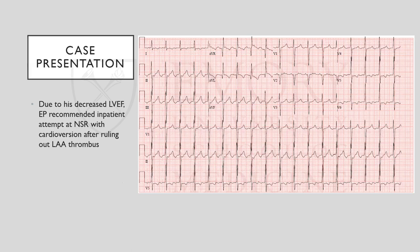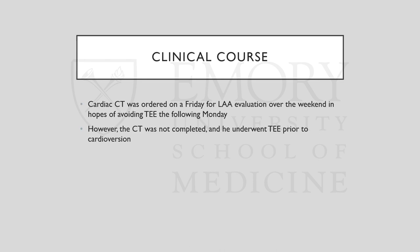The presenting EKG was significant for typical flutter with rates in the 100s with left anterior fascicular block. Due to his decreased left ventricular ejection fraction, EP recommended inpatient attempt at normal sinus rhythm cardioversion after ruling out left atrial appendage thrombus. These consults came in on a Friday, so in the spirit of not wasting time, we decided to recommend a cardiac CT for left atrial appendage evaluation over the weekend in hopes of avoiding TEE the following Monday. However, the CT was not completed, and he underwent TEE prior to cardioversion.